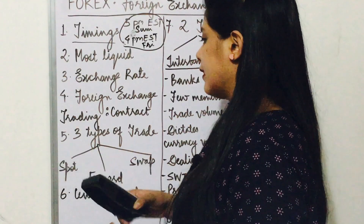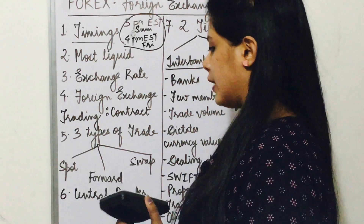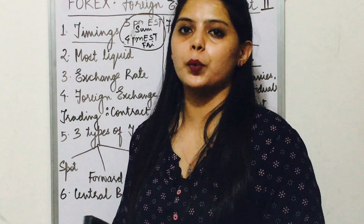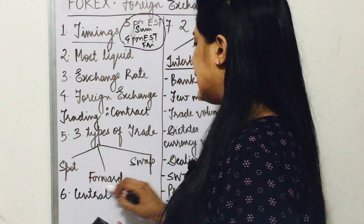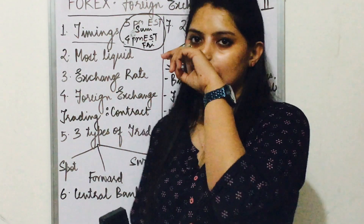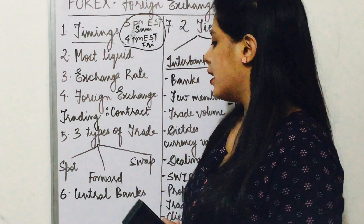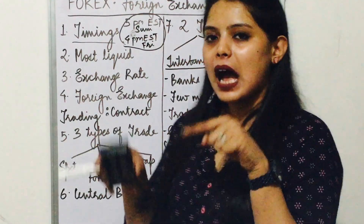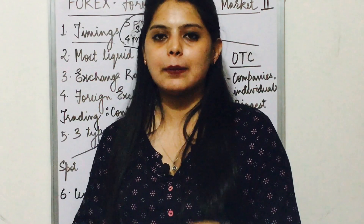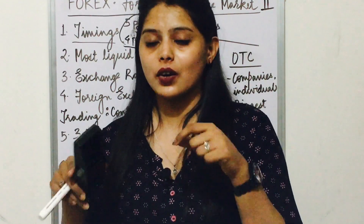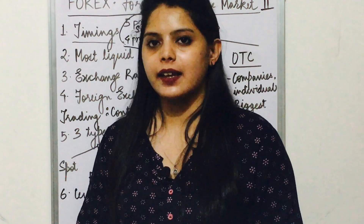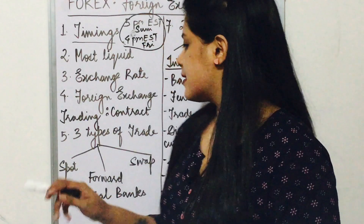There are three types of trading, as we saw last time: swap, spot, and forward. First is spot. If you are trading today, the price of the currency is on the date of trading or on the date of selling — that is a spot trade. When the currency is exchanged on the particular date of trading or date of sale, that is spot.